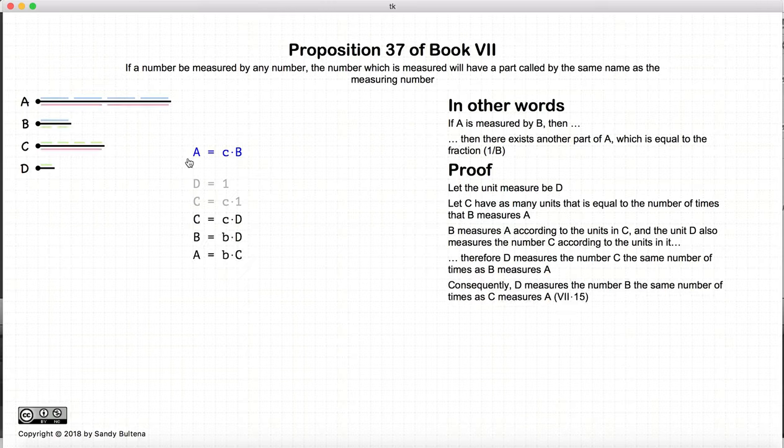And according to Proposition 15 of this book, if this is the case that b measures a according to the units in c, and the unit measures c according to the units in c, then we can take the inverse and say that the unit d measures b the same number of times that c will measure a. So again, that's Proposition 15 of this book.